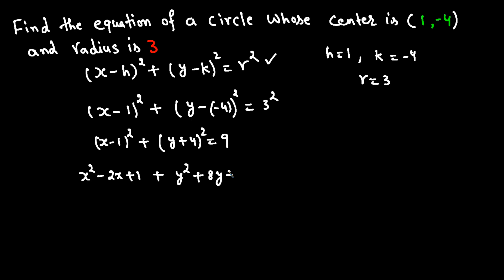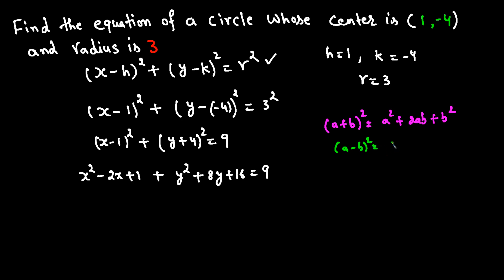We can expand further using the binomial formulas: (a + b)² = a² + 2ab + b² and (a − b)² = a² − 2ab + b². Try to memorize these — you can make a flashcard for them as they are always useful.